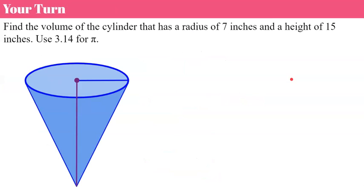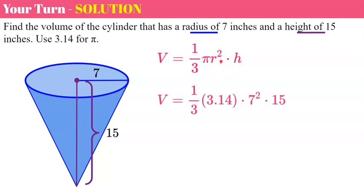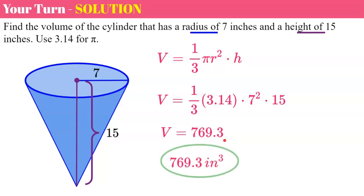Now it's your turn. Pause the video and find the volume of the cone with a radius of seven inches and a height of 15 inches, using 3.14 for pi. Welcome back. We label the radius as seven inches and the height as 15 inches. Our formula is one-third times π times r squared times height. Plugging in: seven squared (seven times seven), times 15, times 3.14, divide by three. You should have gotten 769.3 cubic inches.